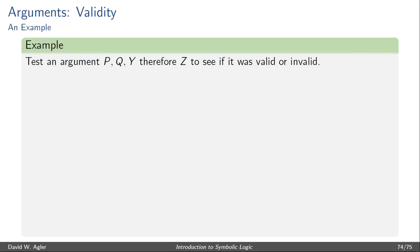Let's take a look at an example, and we'll just sketch an example to see how the truth tree method works here. So suppose we had an argument that consisted of P, Q, and Y, therefore Z, and we wanted to see if it was valid or invalid.